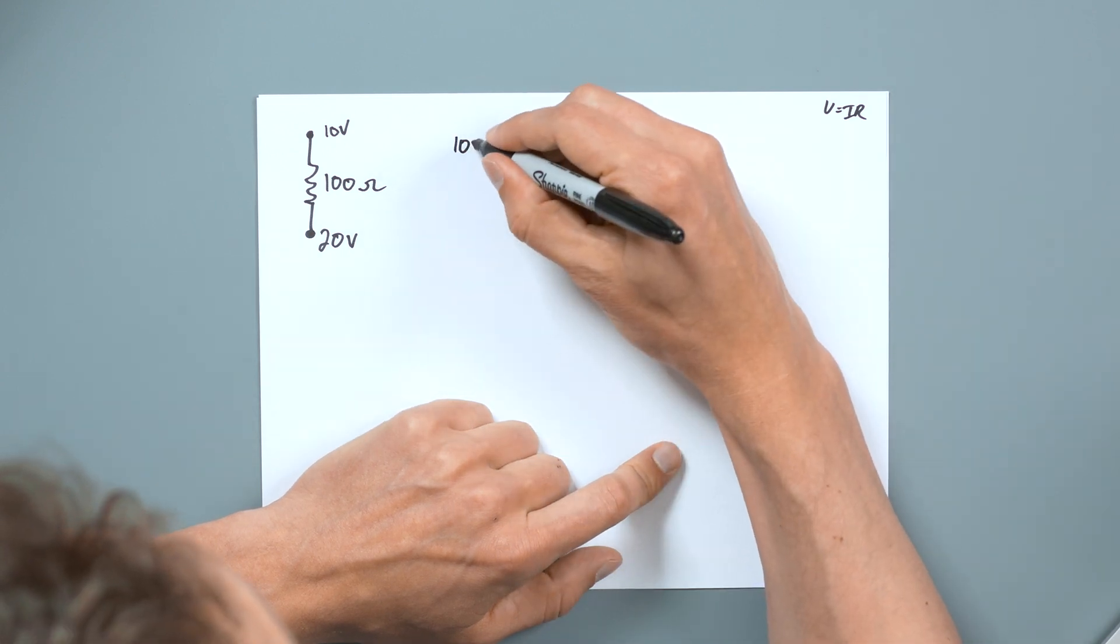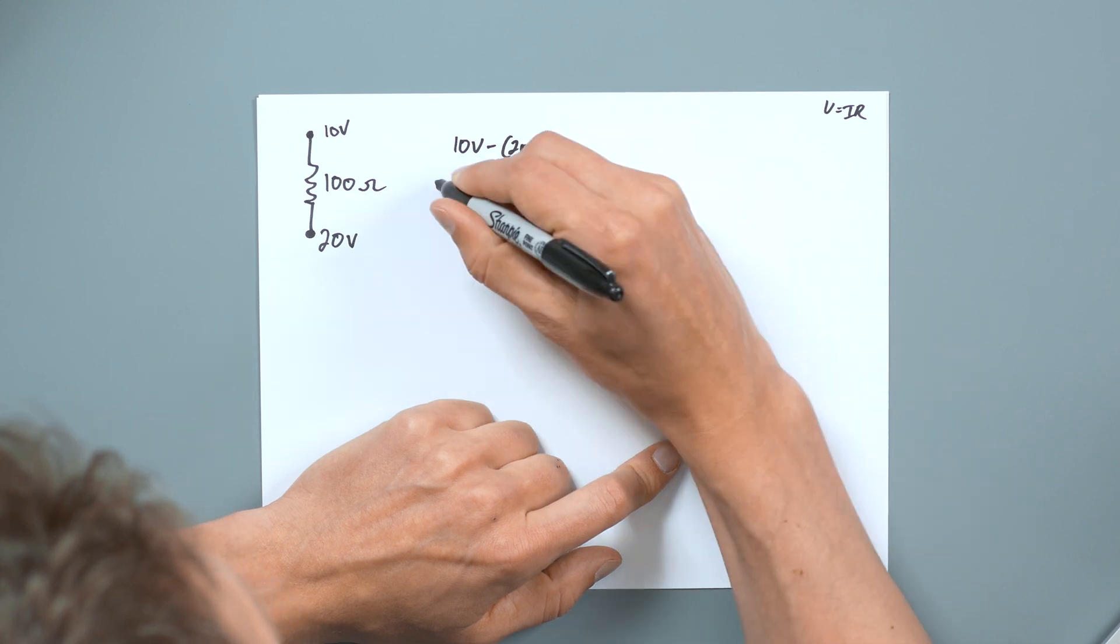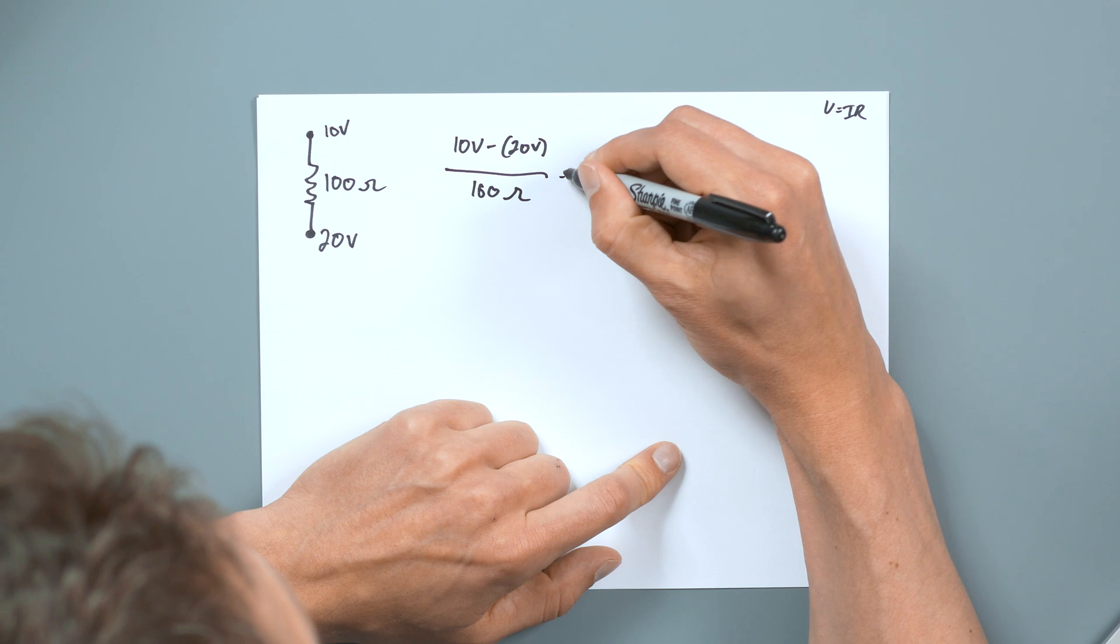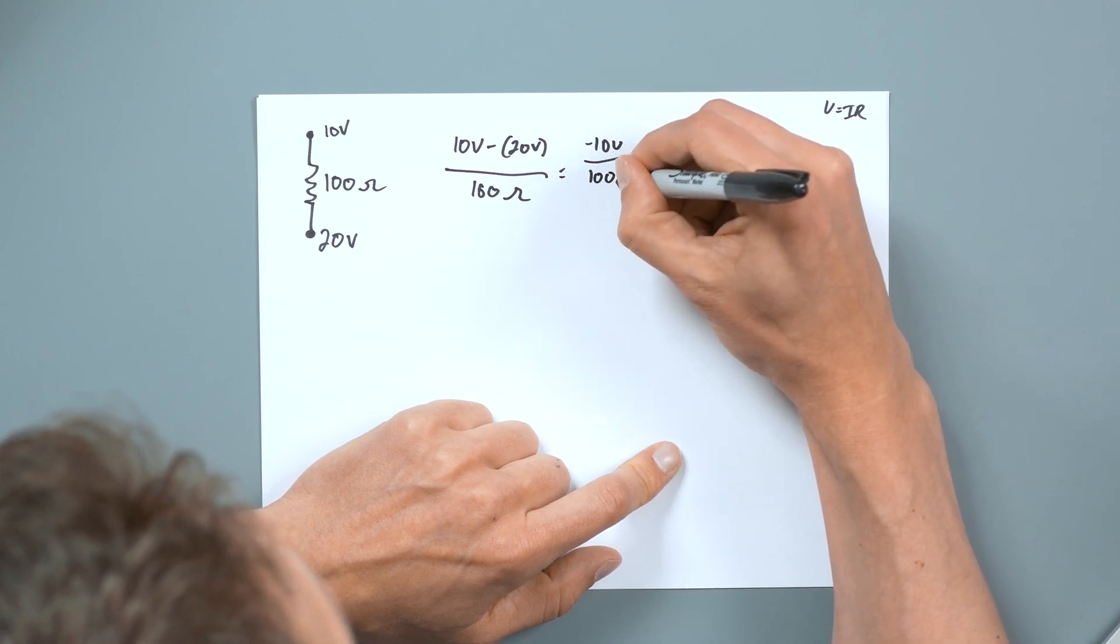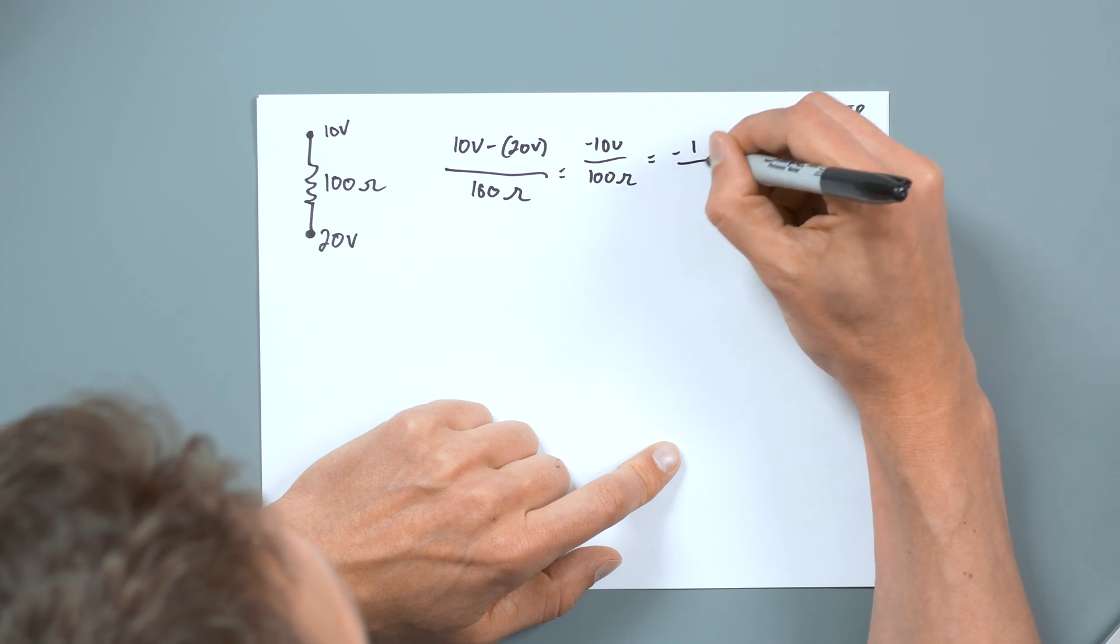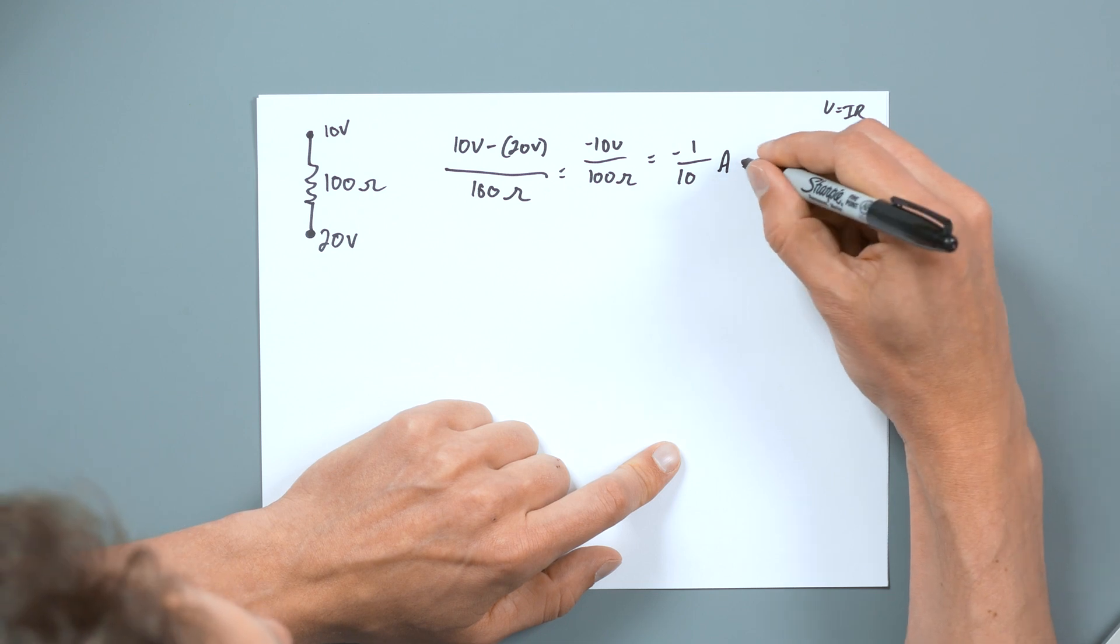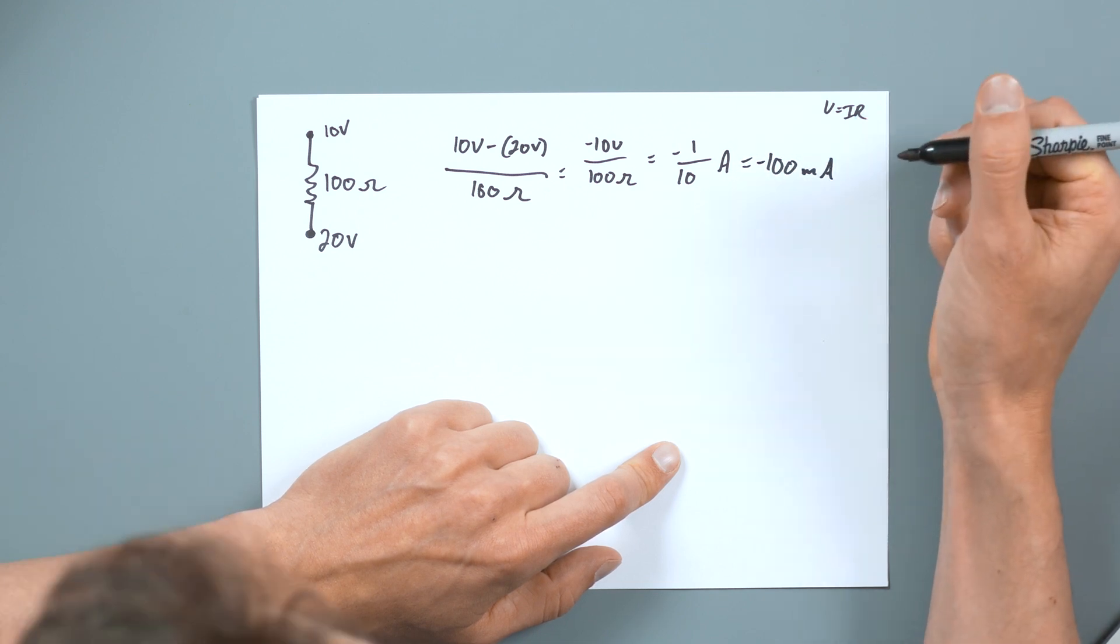So I'll have 10 volts minus 20 volts over 100 ohms, which equals negative 10 volts over 100 ohms, which equals negative one tenth amps, or 100 milliamps, negative 100 milliamps.